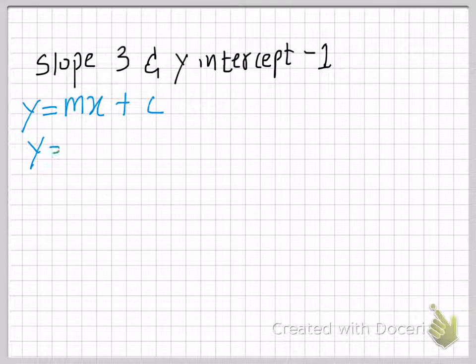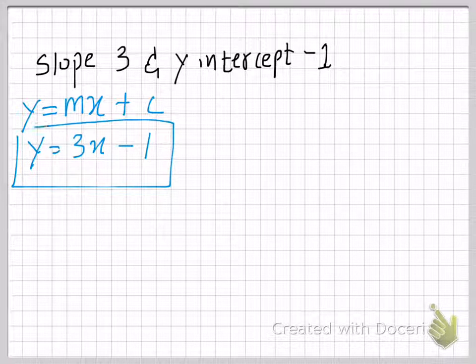Now, you already know the slope, which is 3, and you already know the y-intercept, which is minus 1. So, in place of c, you are going to plug in minus 1. And right there, you have the equation.